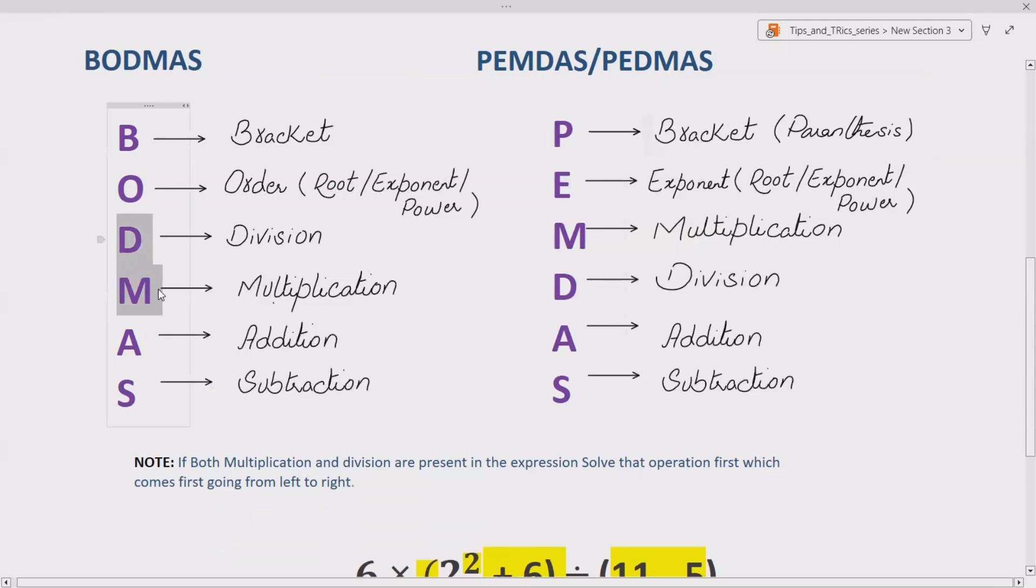Note that BODMAS says division multiplication, PEMDAS says multiplication division. Actually, multiplication and division have same level of preference. It means when both multiplication and division are present in your expression, solve that operation first which comes first going from left to right.